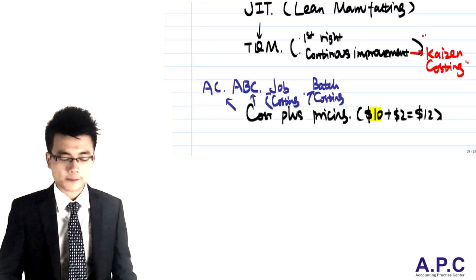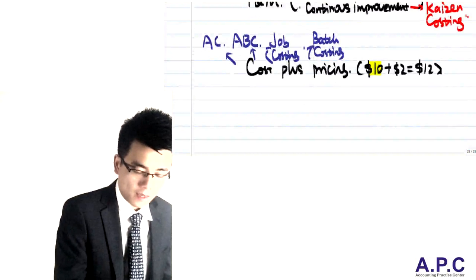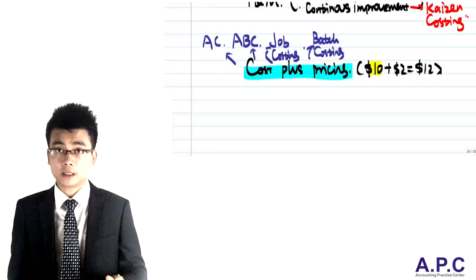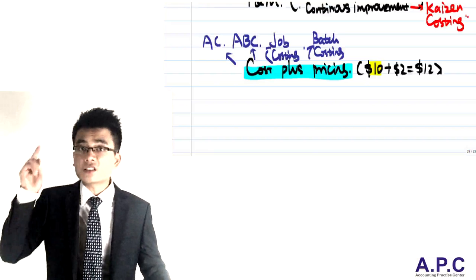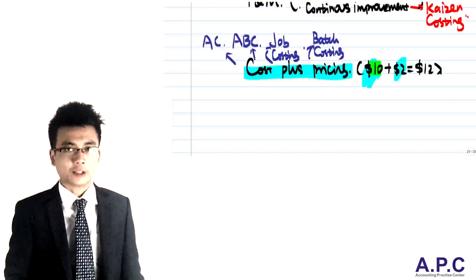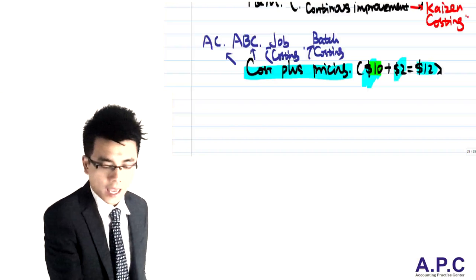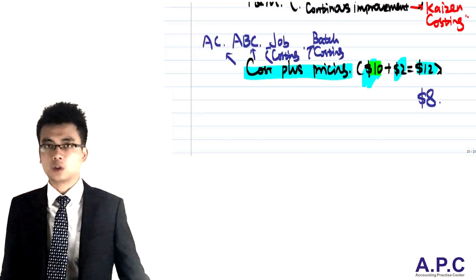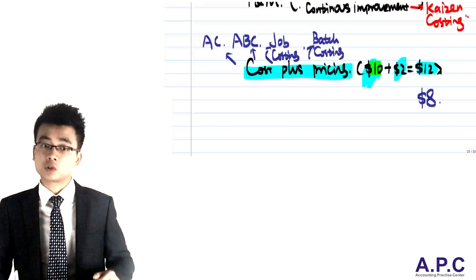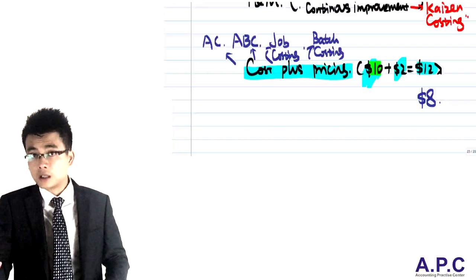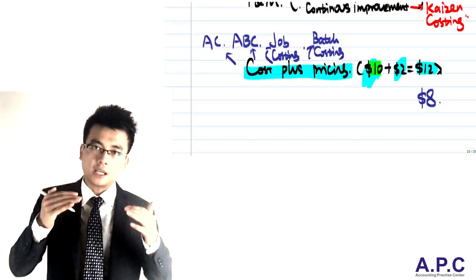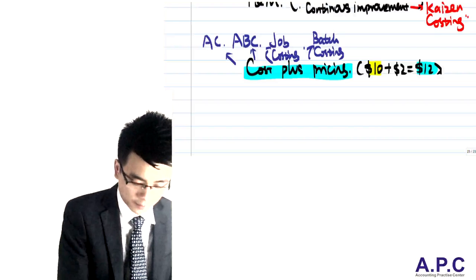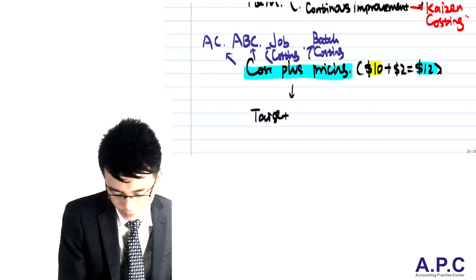It would be quite naive for companies nowadays to use cost plus pricing because there is lots of competition. It's not guaranteed that if you incur cost of $10 and want a profit of $2, you can sell at $12. Maybe one of your competitors sells their product at only $8, but you're going to sell at $12. If the quality of the two products is the same, customers would choose the lower price of $8. Hence, companies are going to change from cost plus pricing to the target approach.